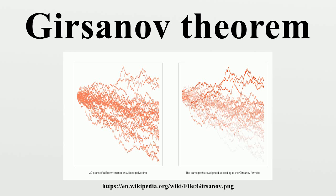Furthermore, if Y is a local martingale under P, then the process is a Q local martingale on the filtered probability space. Corollary: if X is a continuous process and W is Brownian motion under measure P, then the resulting process is Brownian motion under Q.